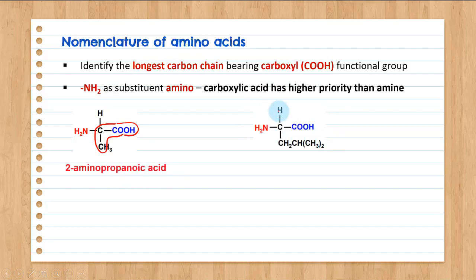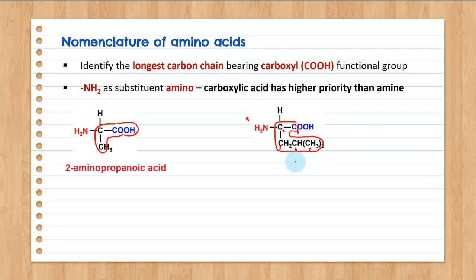For the second structure, again COOH is your first carbon and you need to identify the longest carbon chain. We have carbons one, two, three, four, and five. Be careful: there are two CH3 groups, meaning one is in the parent chain and the other is a substituent at carbon number four. So we label it: carbon one, two, three, four, and five with a methyl substituent at carbon four. Amino starts with A, methyl starts with M. So the name is 2-amino-4-methylpentanoic acid, a parent chain containing five carbons.